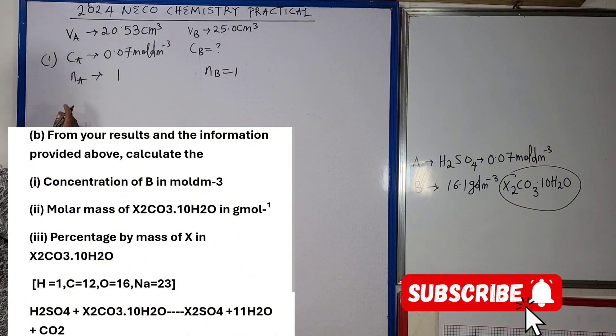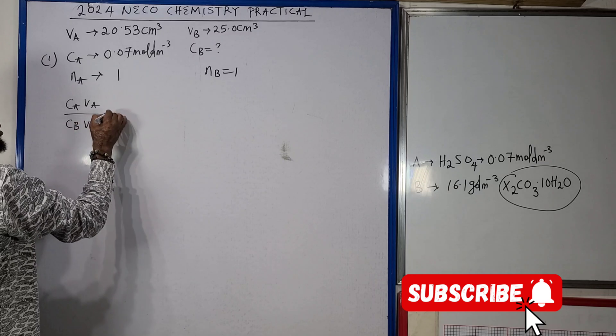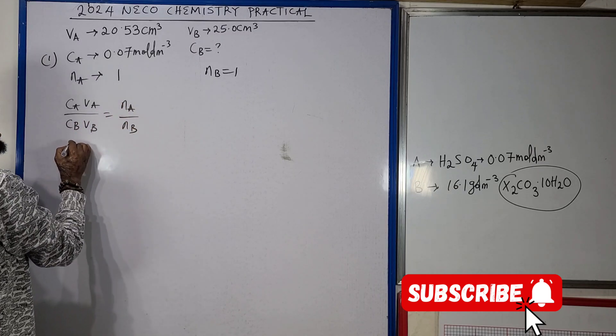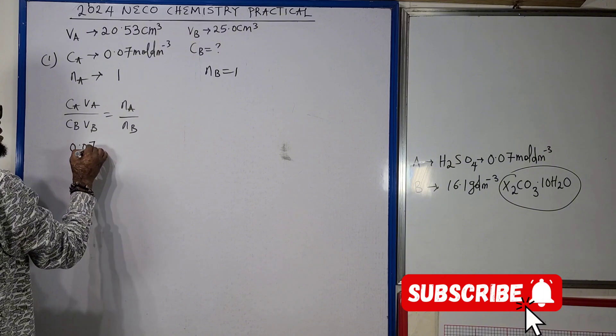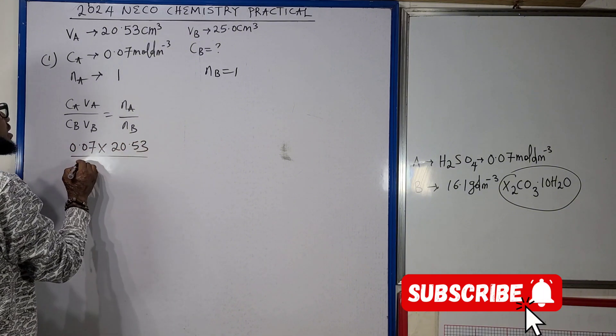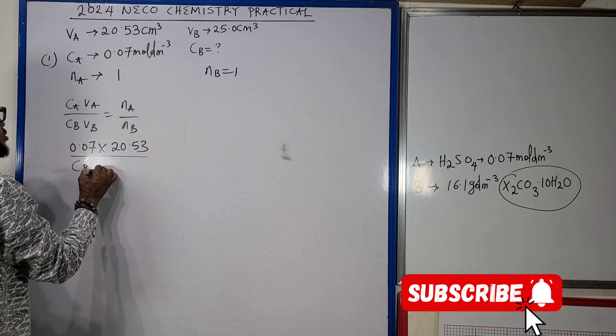I am looking for CB in mole per dm³ and my VB here is the 25 cm³ of the pipette. So in this case what this means is that CAVA/CBVB equals to NA/NB.